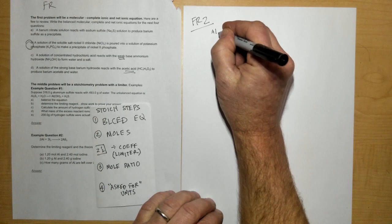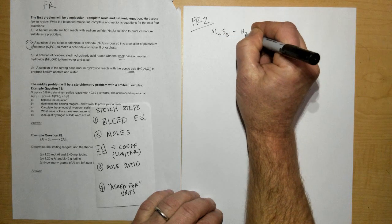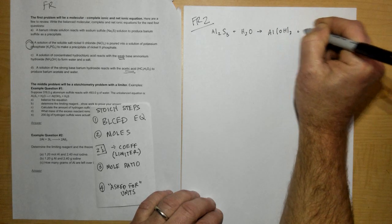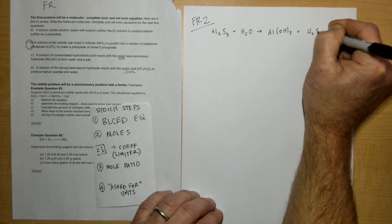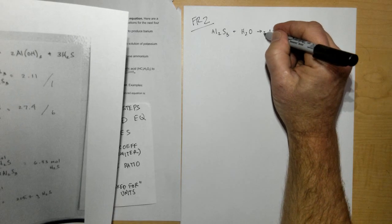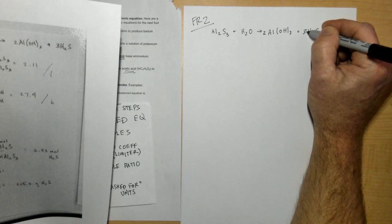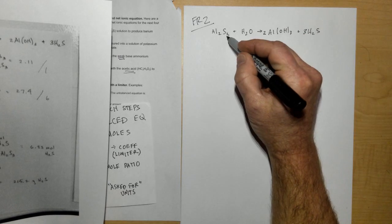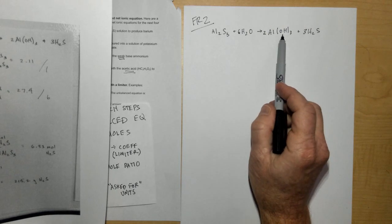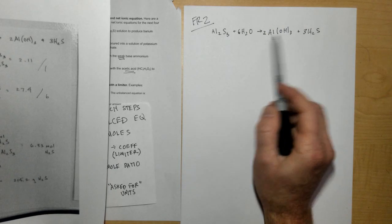Step number one in doing these types of problems is to write the balanced chemical equation. We have Al2S3 plus H2O goes to Al(OH)3 plus H2S. To balance this equation, we're going to need a two in front of here to get us six hydroxides, then a three here to get us the three sulfurs that we need, which means we'll need a six in front of the H2O to get us the correct number of H's and OH's on this side.